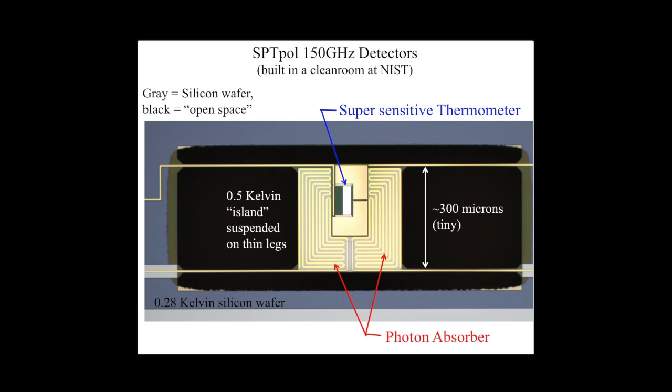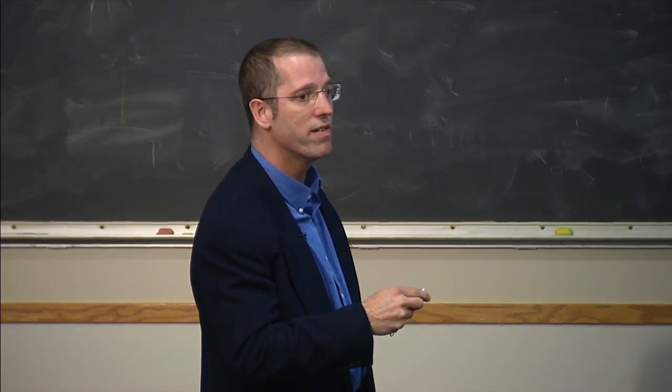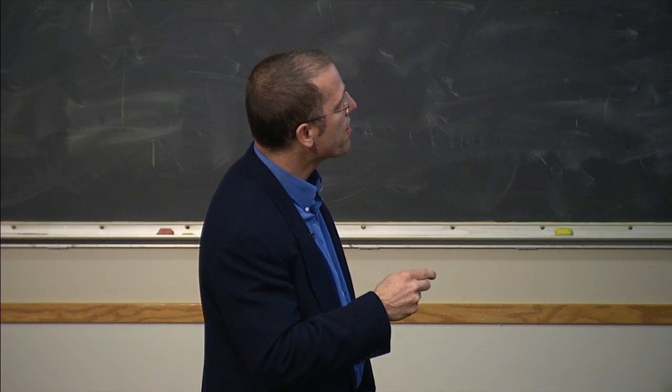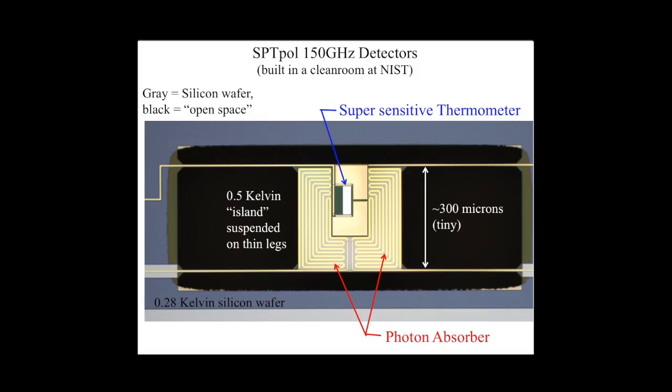The absorbing structure is only about 300 microns across — small is good because that means the microwave background power can warm it up fast. Light travels on little wires as electromagnetic fields and gets absorbed in meandering lines. On this small silicon island is a superconducting transition edge thermometer. Superconductors change their resistance very rapidly with temperature right near the transition temperature, making it a very sensitive thermometer. This is where all the light gets absorbed; the thing heats up slightly.